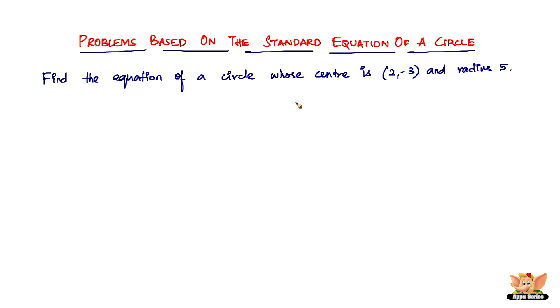First of all, since this is the first problem we are going to solve on the standard equation of a circle, let me take you back to the previous video where we had a circle like this. We had these important points in the circle - one is the center of the circle and one is the moving point P on the circle.